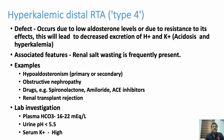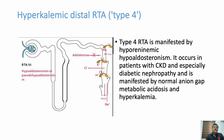In the emergency room, the most important causes of Type 4 RTA are obstructive nephropathy, spironolactone, and ACE inhibitors. Plasma bicarbonate is 16–20 mEq/L, urine pH is less than 5.5, and serum potassium is high. Type 4 RTA manifests as hyporeninic hypoaldosteronism and occurs in patients with chronic kidney disease, obstructive uropathy, and diabetic nephropathy.